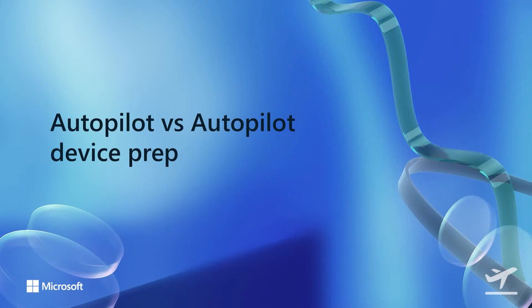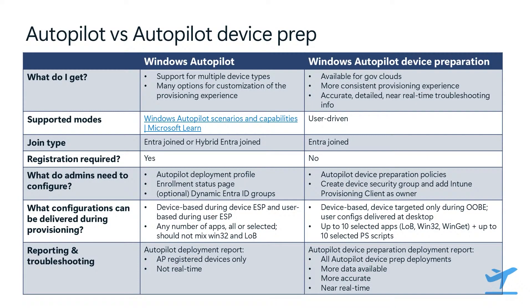Let's start by talking about some differences between the two solutions and some guidance around which solution to choose in your situation. Hopefully by now everyone has heard about Windows Autopilot device prep — this is the new re-architected solution from Windows Autopilot. The top differences you need to know are that Autopilot provides more flexibility at this time: it supports more scenarios, more capabilities. If you have additional modes or hybrid Azure AD join, those are the situations where Autopilot will be a better option for you.